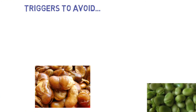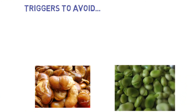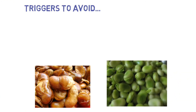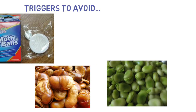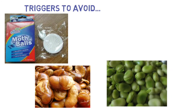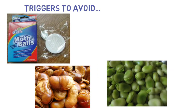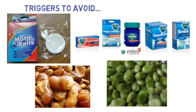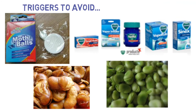Always avoid antimalarials. Certain foods like fava beans and chemicals like mothballs and naphthalene-containing products also trigger hemolysis for G6PD-deficient people.